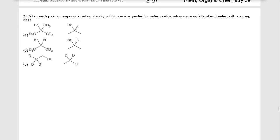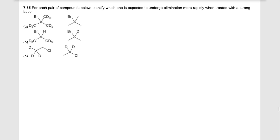For each pair of compounds below, we're going to identify which one is expected to undergo elimination more rapidly when treated with a strong base. We're looking for the one that doesn't have a deuterium as the beta hydrogen. This one on the left has a deuterium instead of hydrogens at the beta position. So the one on the right is going to be more rapid.